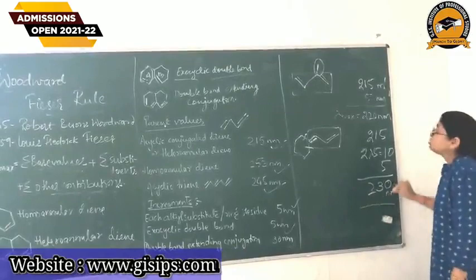So this is how we can calculate the lambda max of any diene structure, by using the Woodward-Fieser Rules. That's all for today. Thank you.